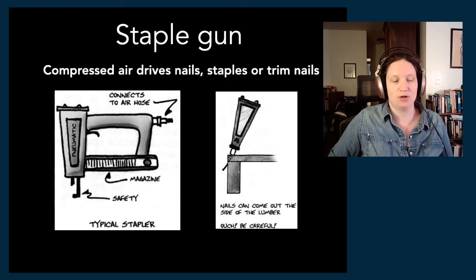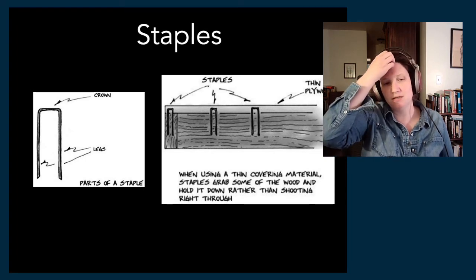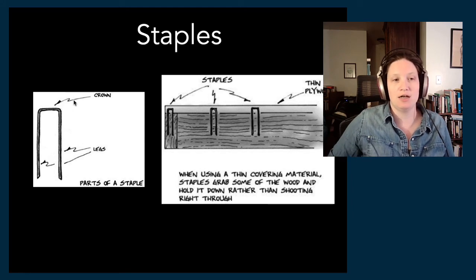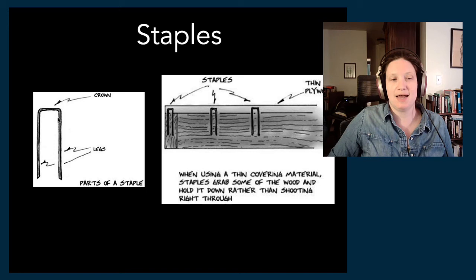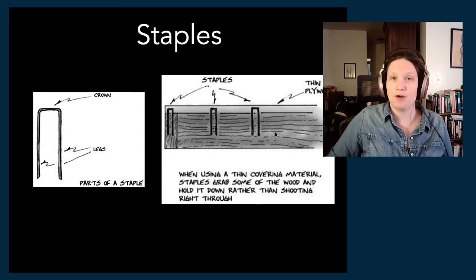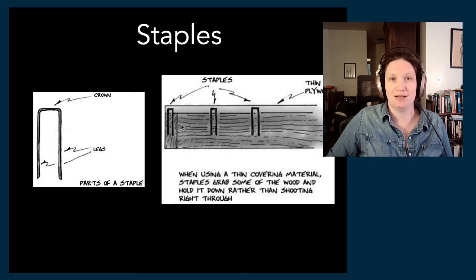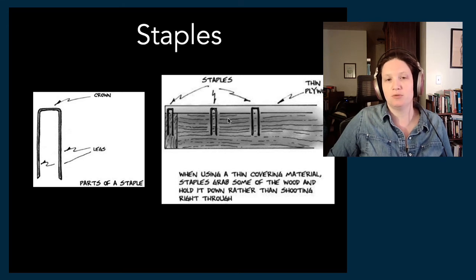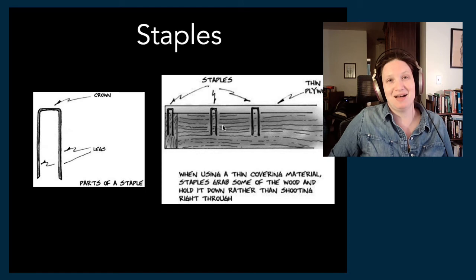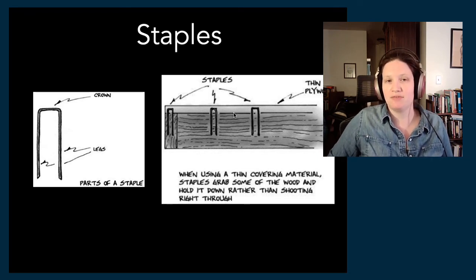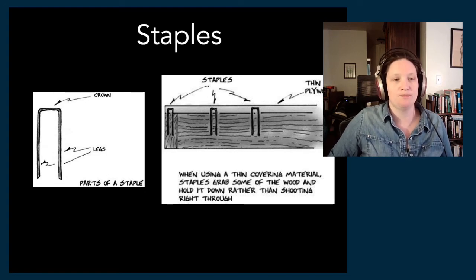Staples come in a couple of different styles. The ones we typically use are a narrow crown staple — the crown is the piece of wire that goes across the top, and then the legs go down. A staple is used, for example, when attaching a thin piece of plywood called luan to the frame of a flat. The staple buries itself into the wood a little bit and bites into the material below. You use both glue and staples — the staples hold the two materials together until the glue dries, and the glue will end up being stronger than the staples.